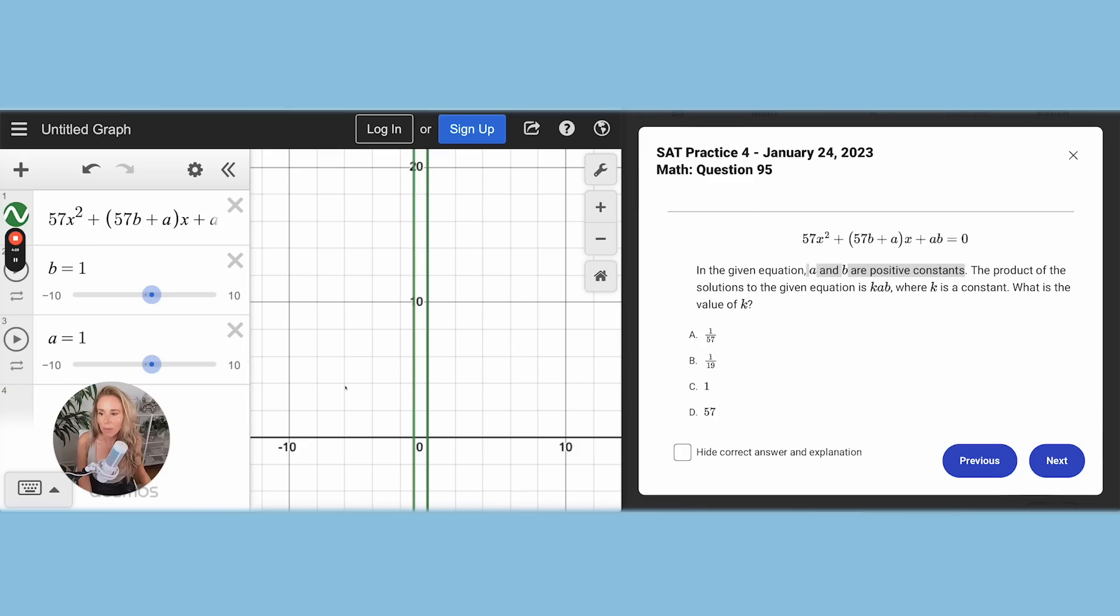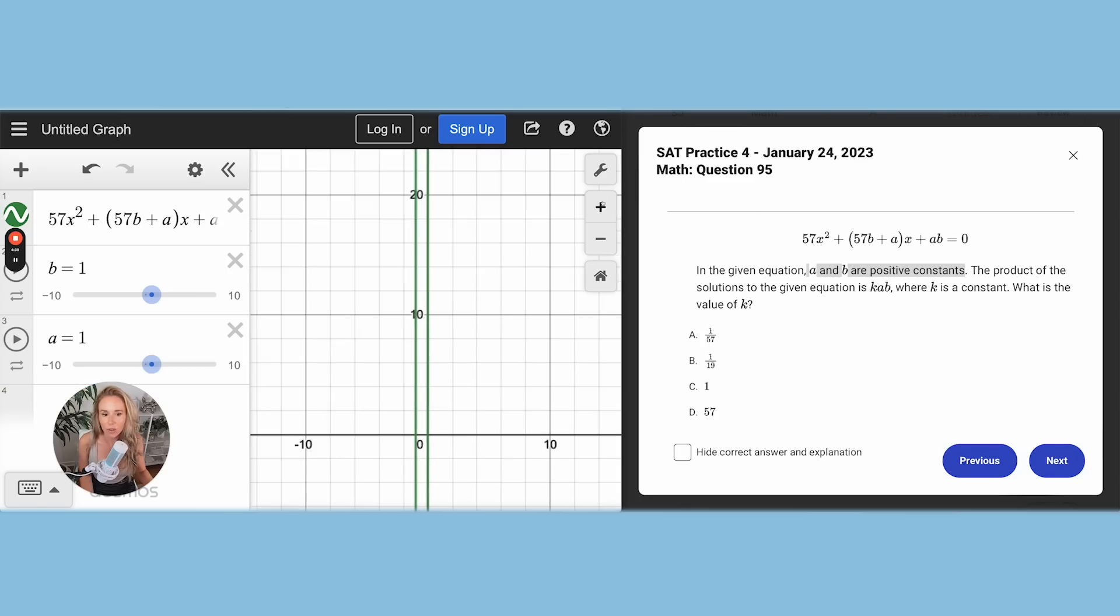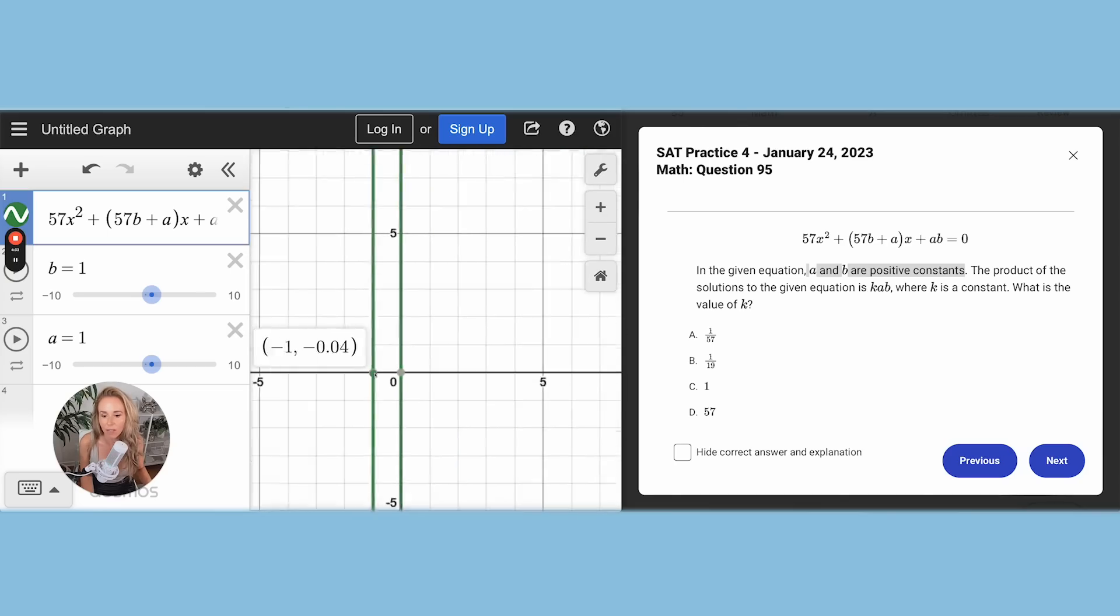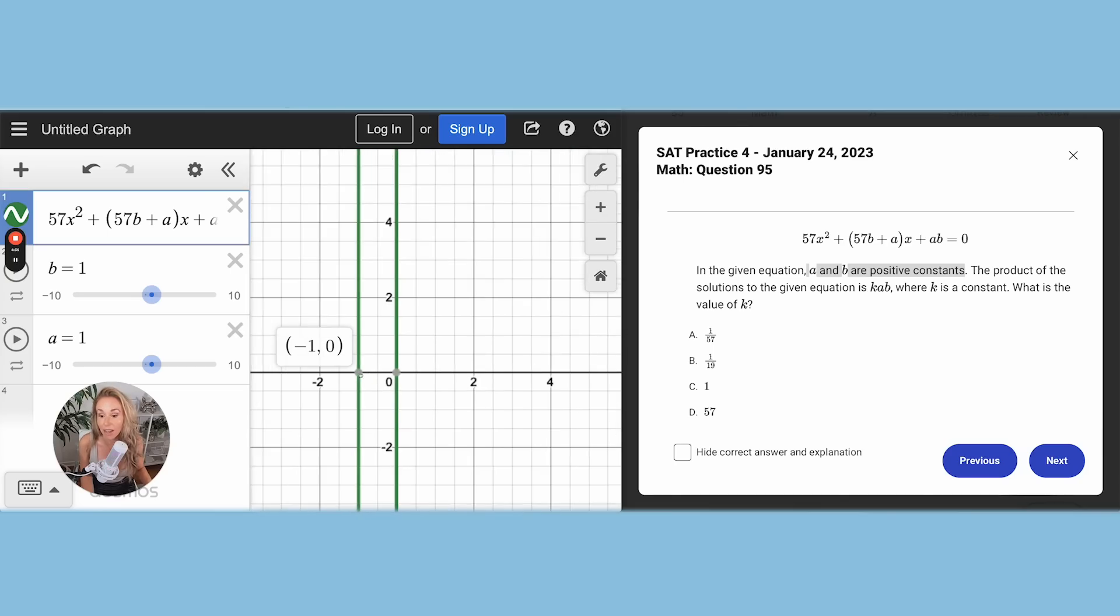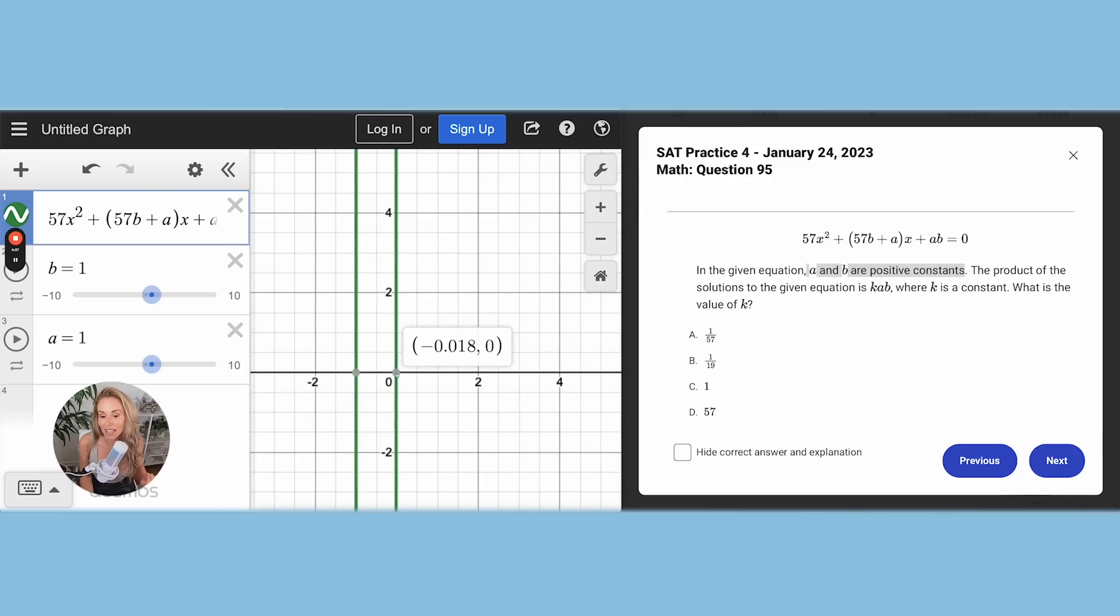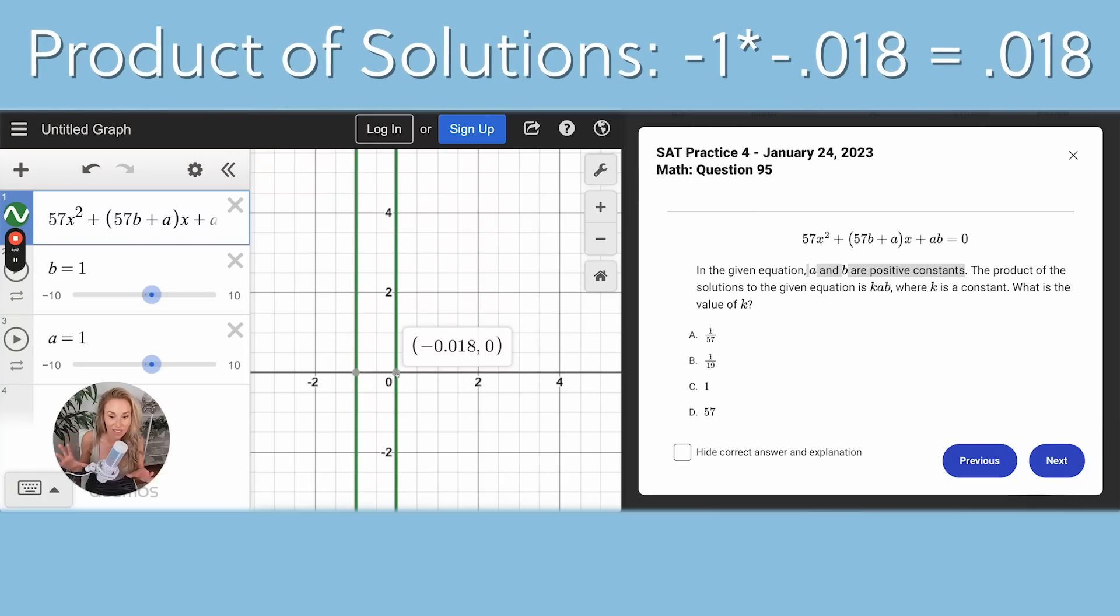When A and B are one, and I zoom in, I can see what the solutions are. So we've got a solution at negative one and at negative 0.18. Okay, so that means negative one times negative 0.18. That's the product of the solution. So it would be a positive 0.18.